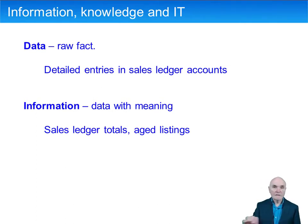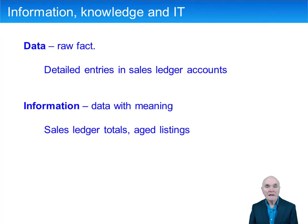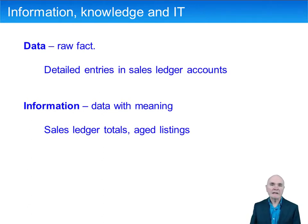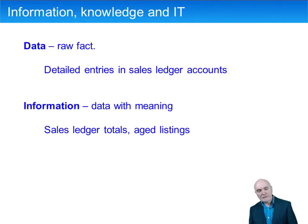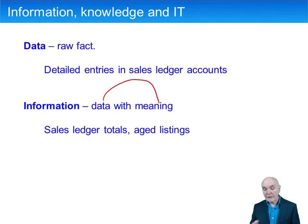However, just a list of invoices in invoice number order with the dates, the customer details, and the amount of the invoice is not actually very informative. We can't do very much with this very large list of invoices — it hasn't really got any particular structure to it. Information really only exists when data has meaning, in other words when the data is presented, summarized, or processed in some way that you can get some meaning from it.